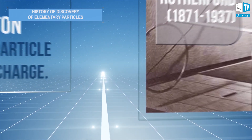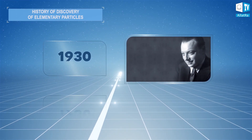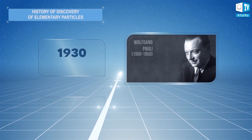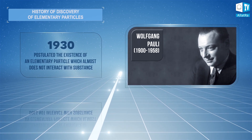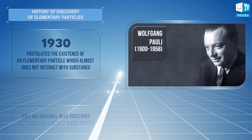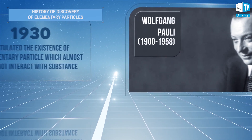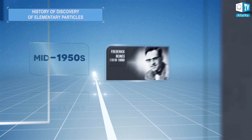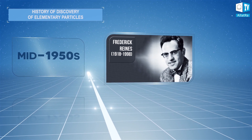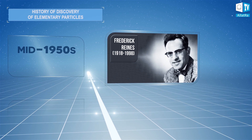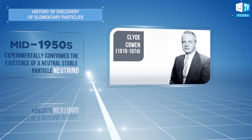In 1930, Swiss physicist Wolfgang Pauli postulated the existence of an elementary particle which almost does not interact with substance. Then, in the mid-1950s, American physicists Frederick Reines and Clyde Cowan experimentally confirmed the existence of a neutral, stable particle — the neutrino.